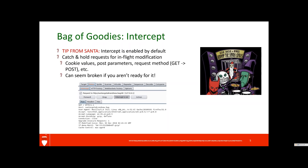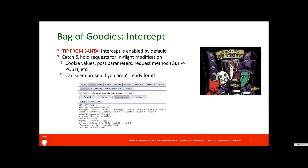It's holding the request so that you can modify it. If you just want the history and don't want to modify it, you can turn Intercept off, and it will work seamlessly, giving you a history of requests and responses in Burp.